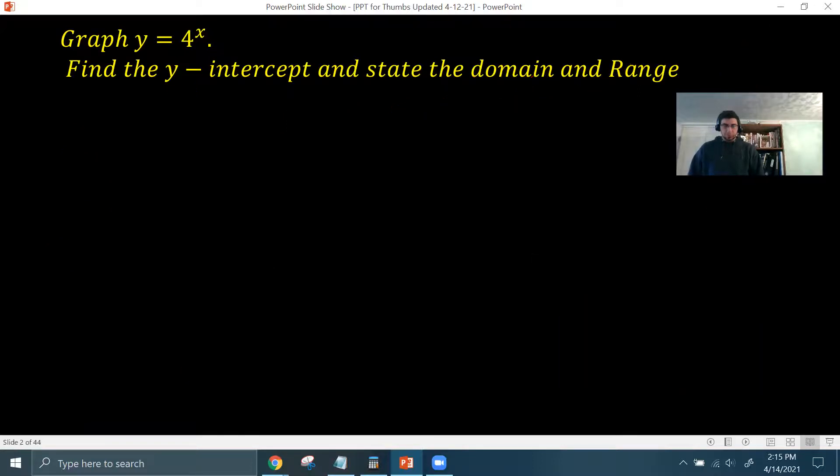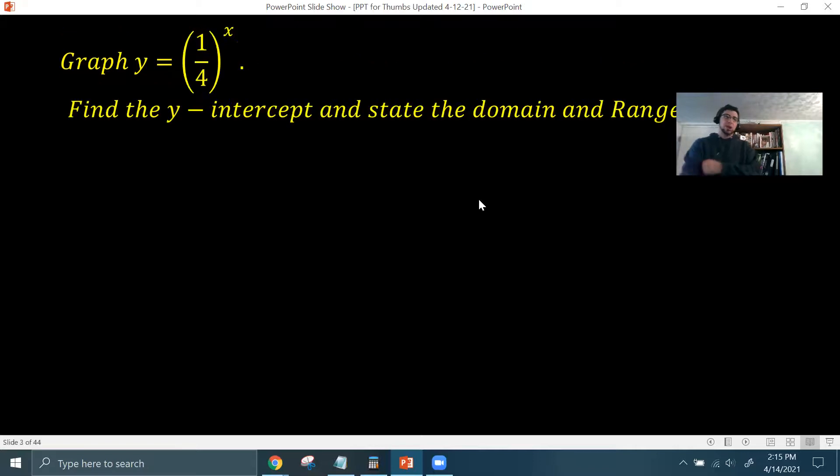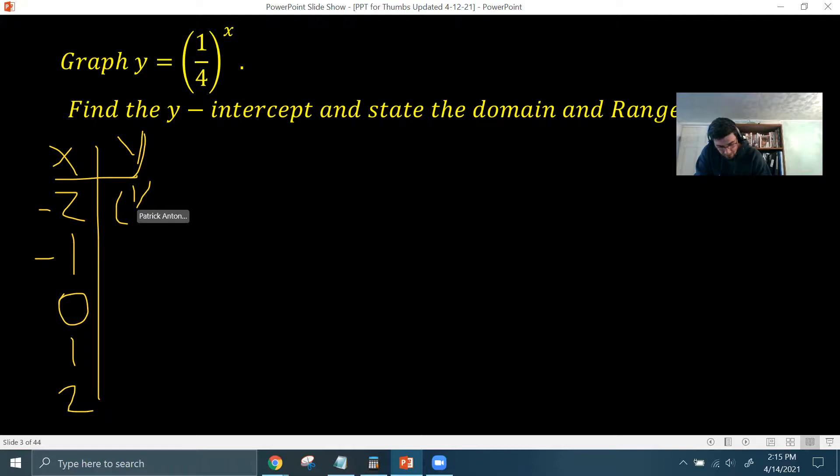All right. So let's do another one. And this time, I'm going to do one that has a fraction. So if we want to graph y equals (1/4) to the x power, find the y-intercept, state the domain and range. Same thing, except different function. So we're going to start with a table. And like I said before, we're going to do x and y values with some negatives, 0, and some positives.